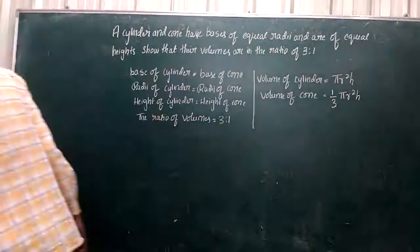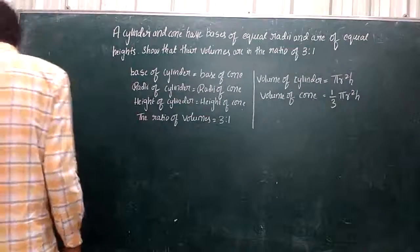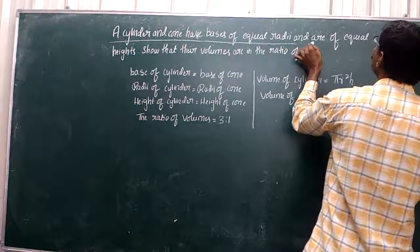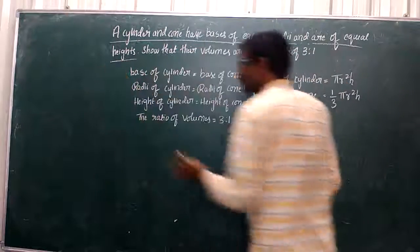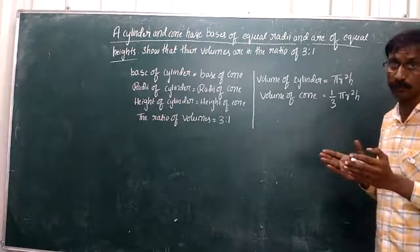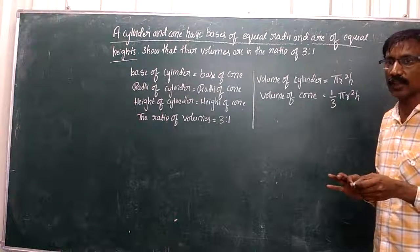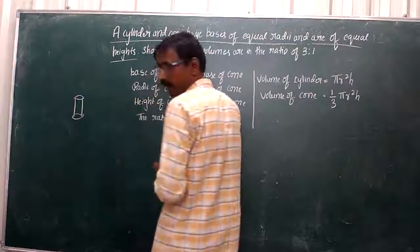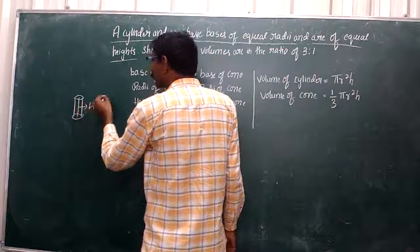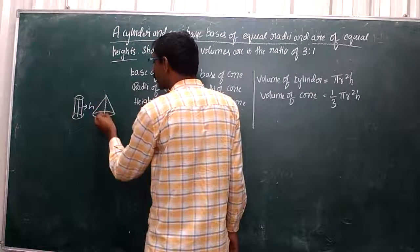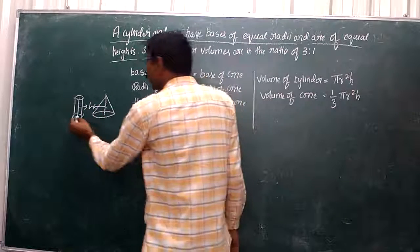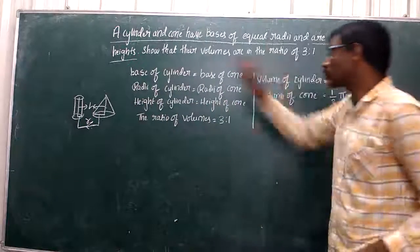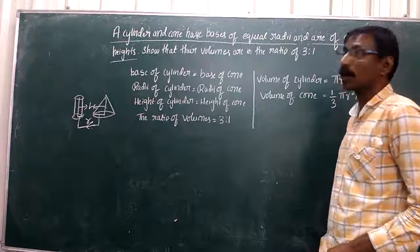So now, the easiest problem is: the cylinder and cone have base of equal radius and are of equal heights. Show that their volumes are in the ratio of 3:1. The radius is the same here for the cylinder and cone. The height is the same here, so that the volumes are in the ratio of 3 is to 1.